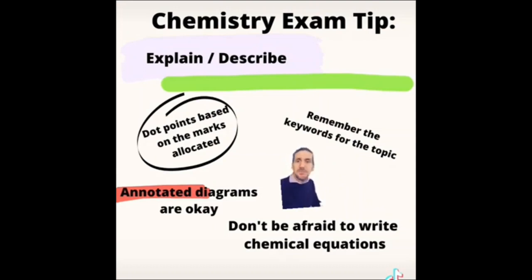That might be collisions, frequency of collisions, proportion of collisions. It might be active site, bonding to active site, things like that. Annotated diagrams are okay. They help you explain things in words you might not have. But make sure your diagram is annotated. Highlight the key points that you're trying to make. Lastly, you're in chemistry. So chemical equations are really, really good to put in your responses.